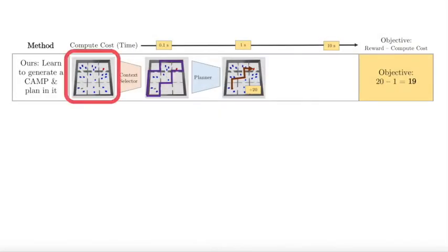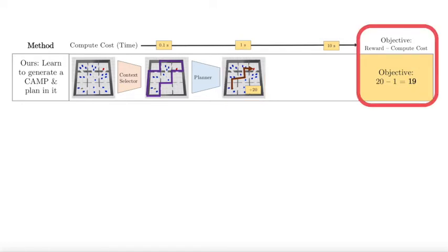Given a new test task, we query the context selector for a constraint to impose and determine which variables to ignore from the learned CSIs. We then plan in the reduced task and execute the found policy. This results in a high reward with only a low computational cost incurred from planning and execution.